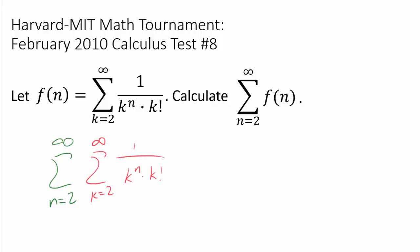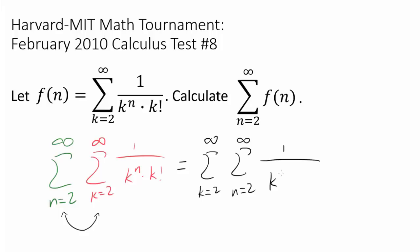The first thing I see is that maybe we can try switching these summations. I think it's going to benefit us if we write this as a summation from k equals 2 to infinity of the summation from n equals 2 to infinity of 1 over k to the nth times k factorial. By switching the summation, we obtain a geometric series inside.